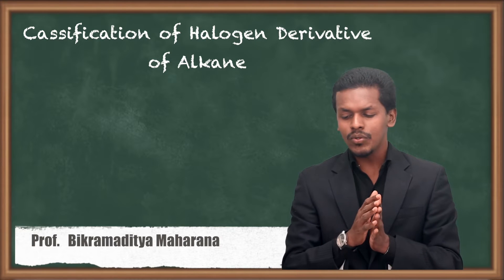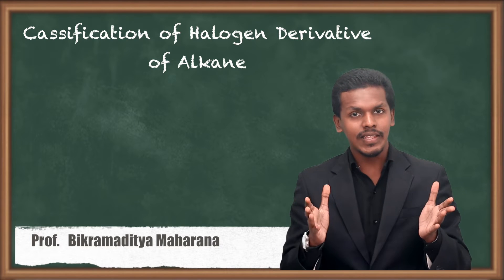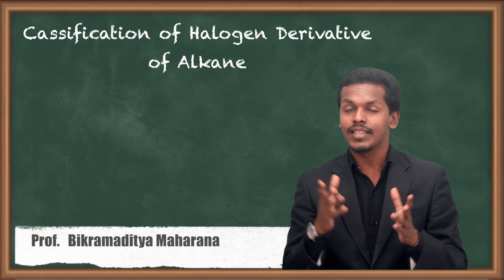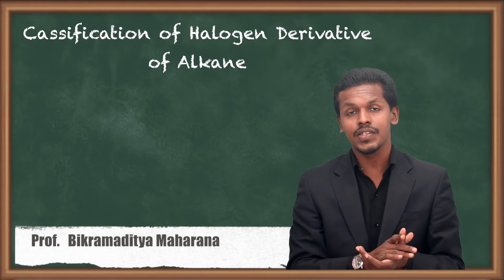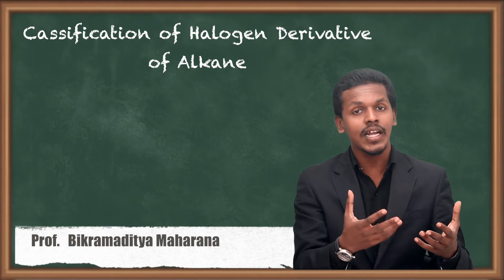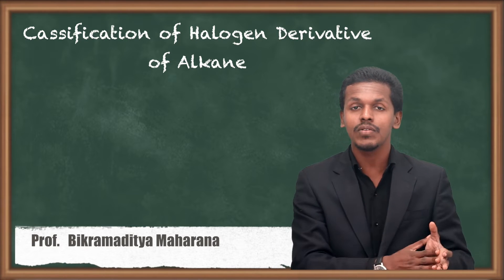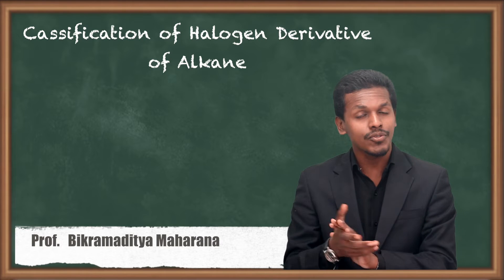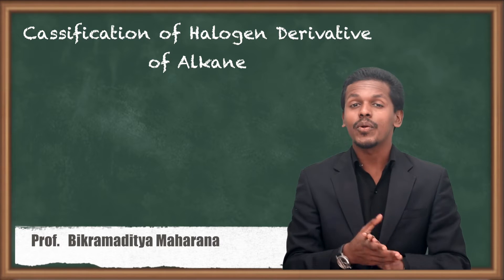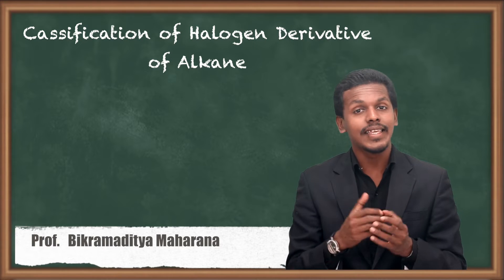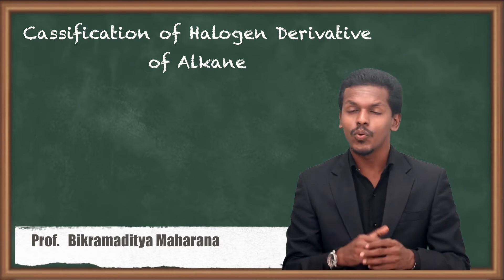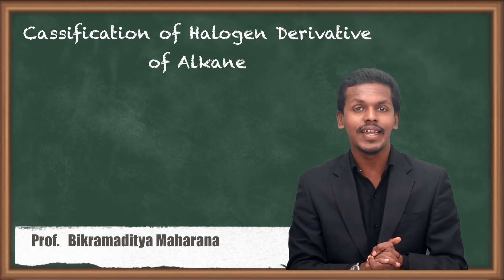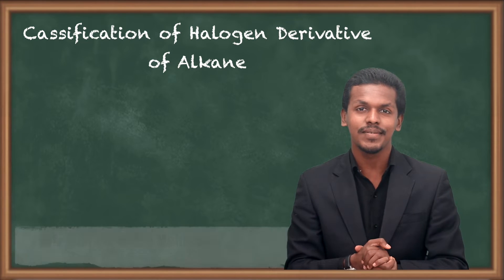So now we are going to classify this halogen derivative of alkane. There are further classifications from which we are going to understand the definitions as well. That is, we are going to classify the haloalkanes — how they are classified and what the definitions of each type are.